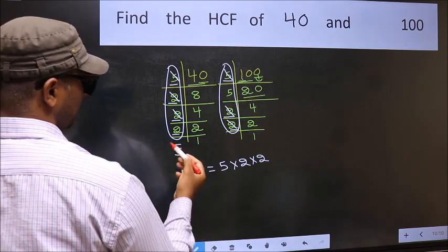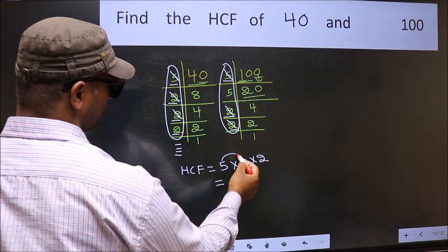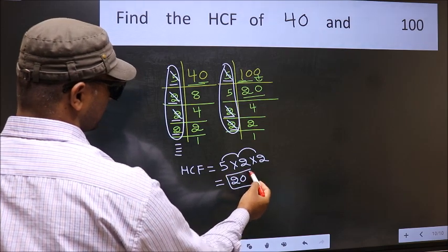No more numbers have been left out. So our HCF is 5 into 2, 10 into 2. 20 is our HCF. Thank you.